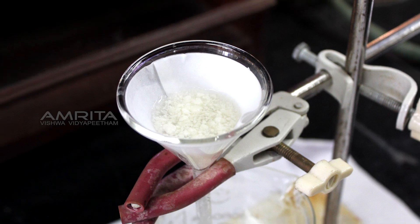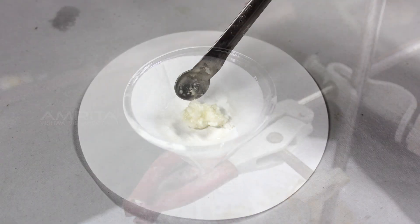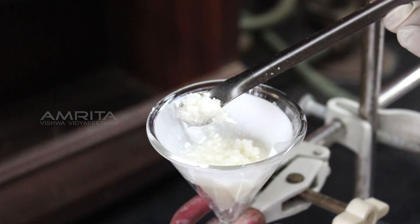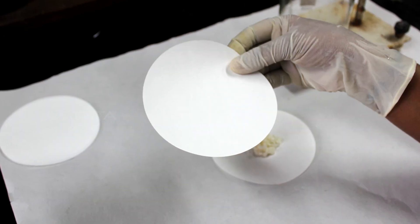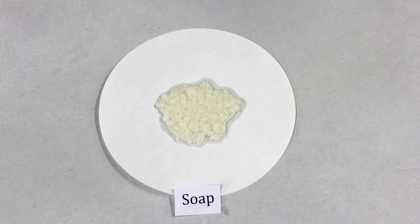After filtration, soap is left behind in the filter paper. Transfer the soap into another filter paper using a spatula. Then dry it by pressing with another filter paper. Soap is prepared.